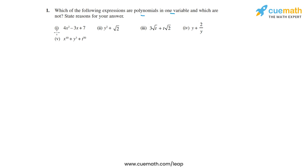In option one, the expression is 4x² minus 3x plus 7. This is a polynomial because the powers of the variables are all integers — x² and x. It is also a polynomial in one variable because there is only one variable, x. So option one is correct.